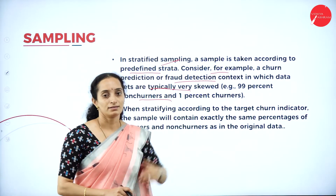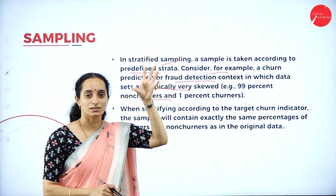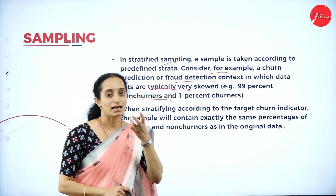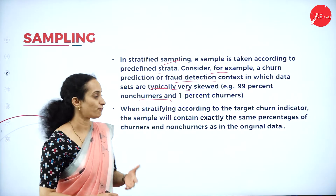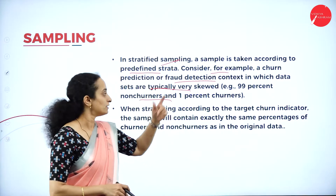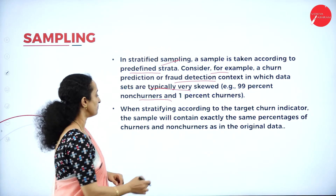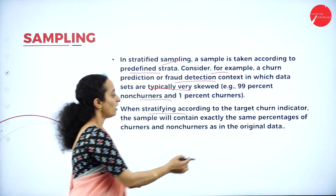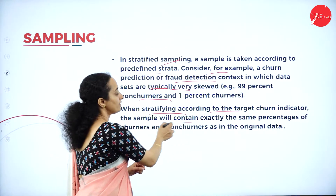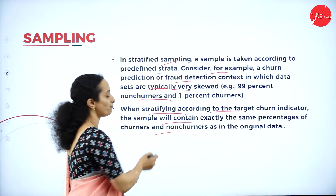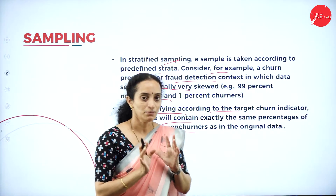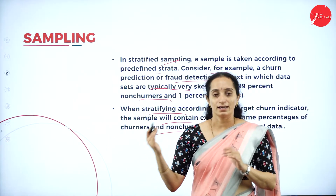You have to take the sampling by considering only 1% for fraud detection — considering only the creamy layer like profile picture, qualifications. By looking at that, you can determine a sample of whether it is a fake profile or a real profile. So, you get a stratified sampling data from the predefined layer or predefined level. When making a layer according to the target churn indicator, the sample will contain exactly the same percentage of churners and non-churners as in the original data.